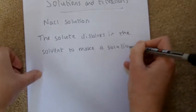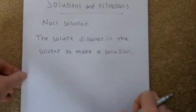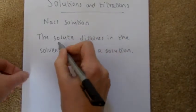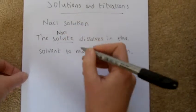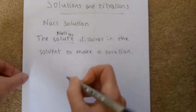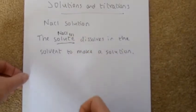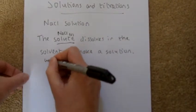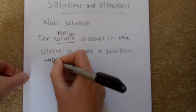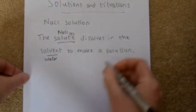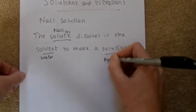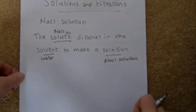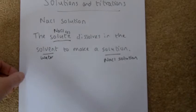The solute dissolves in the solvent to make a solution. If I said to you make a sodium chloride solution, the solute is sodium chloride — quite often it is a solid, though not always. You dissolve it in the solvent, in this case water, and that gives you a sodium chloride solution.